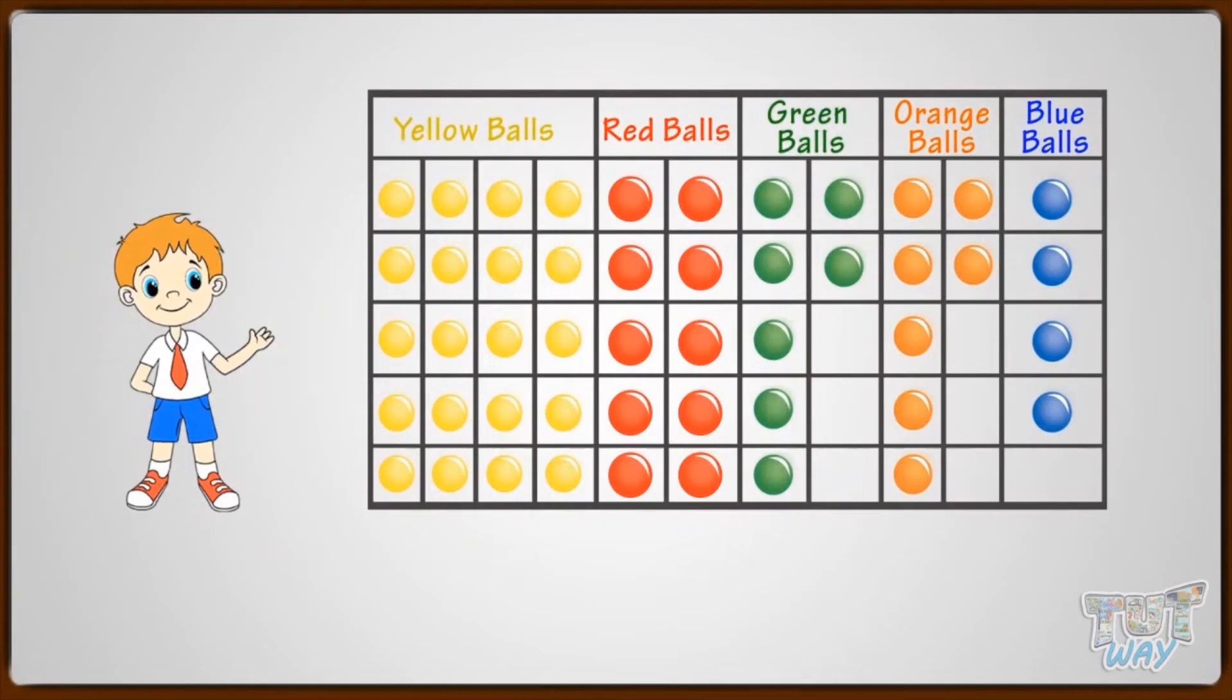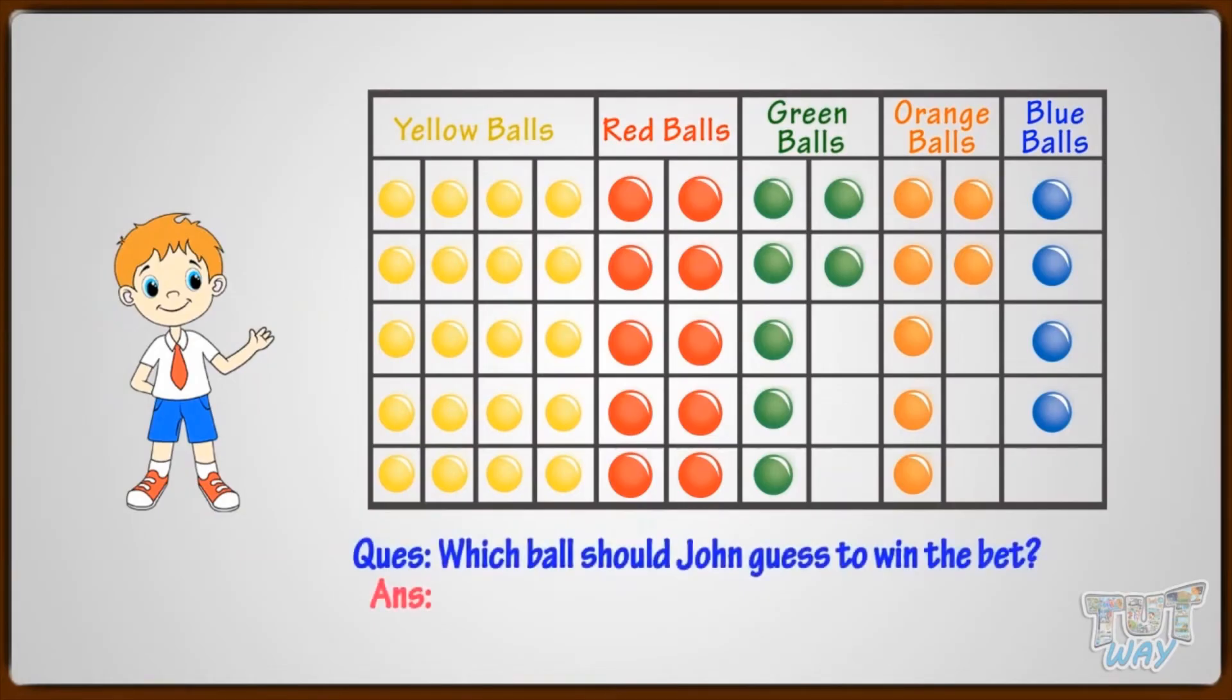If John has to bet that he will pick the ball, which ball should John guess to win the bet? John should guess yellow ball. As yellow ball is most probable or likely to be picked, and if he bets to pick yellow ball, most chances are there that John will pick yellow ball and can win the bet.